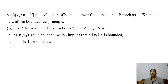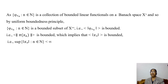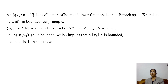The set {φ_{xₙ} : n ∈ ℕ} is a collection of bounded linear functionals on the Banach space x*. By the Uniform Boundedness Principle, the set {φ_{xₙ} : n ∈ ℕ} is a bounded subset of x**, meaning the sequence ‖φ_{xₙ}‖ is bounded. Since φ_{xₙ} = φ(xₙ) and φ is an isometry proved in the last lecture, we have ‖φ(xₙ)‖ = ‖xₙ‖.